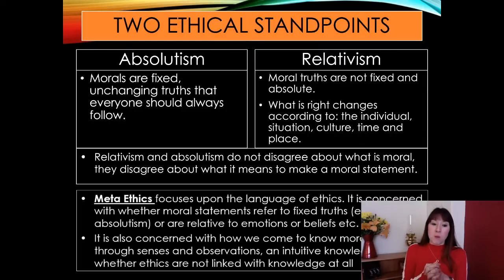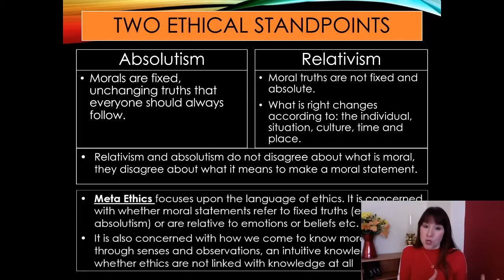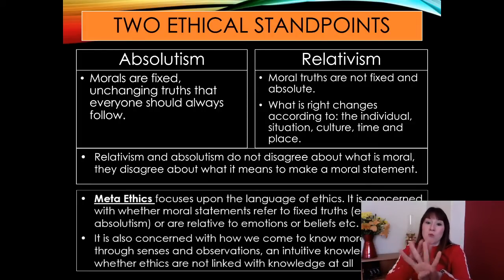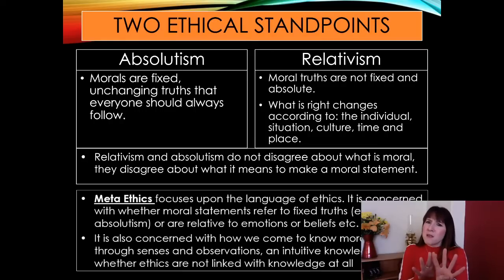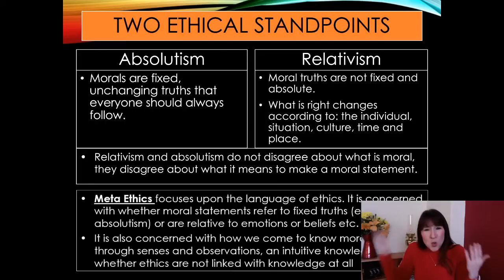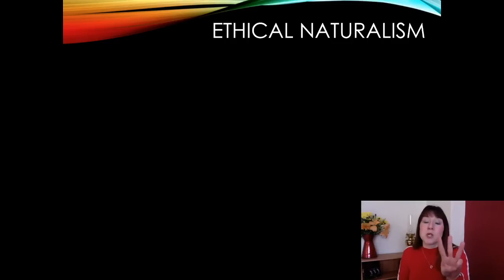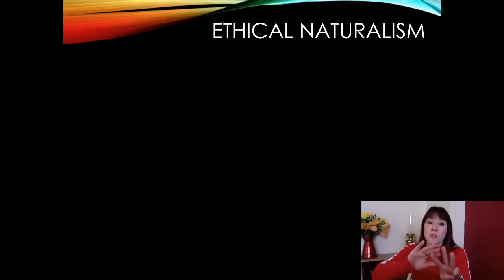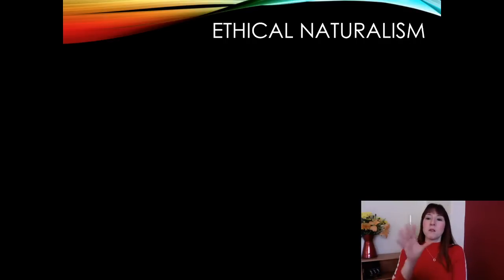Meta ethics focuses on the language of ethics — ethical language. It is concerned with whether moral statements refer to fixed truths, ethical absolutism, or are relative to emotions and beliefs. The four words we focus on are: good, bad, right, and wrong — no others. Are these absolute and fixed, or are they relative? Meta ethics is also concerned with how we come to know morals: through senses and observation, intuitive knowledge, or ethics not linked to any knowledge at all. There are three arguments: ethical naturalism, intuitionism, and emotivism.